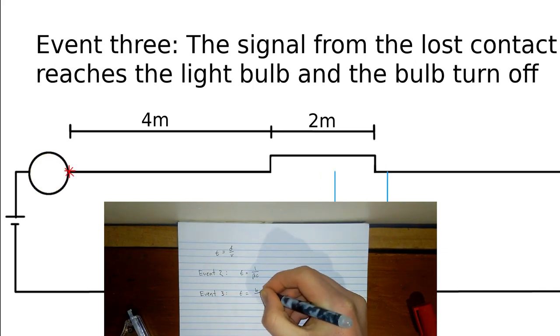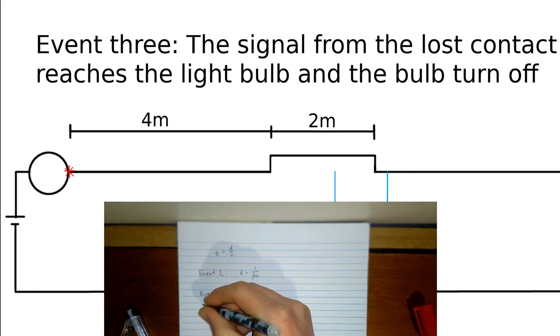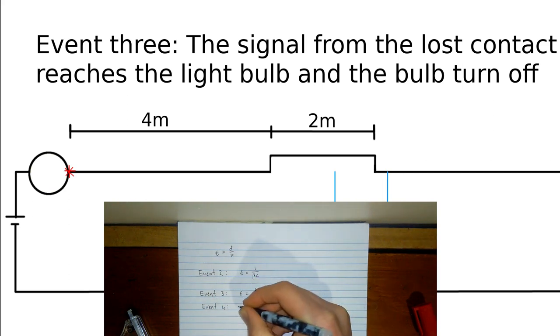Event 3 is only dependent on when event 1 occurs and the time it takes for the signal to propagate. The time it takes to propagate is 4 divided by c. So, t equals 4 divided by c, which is approximately 1.3 times 10 to the negative 8 seconds.